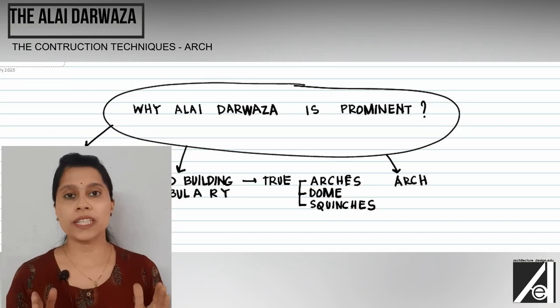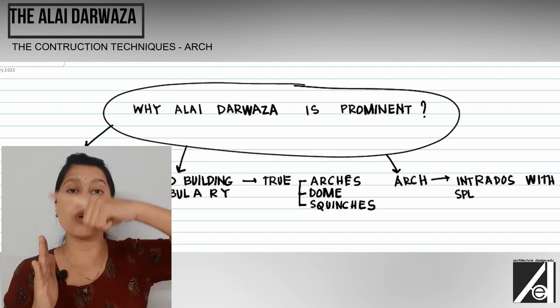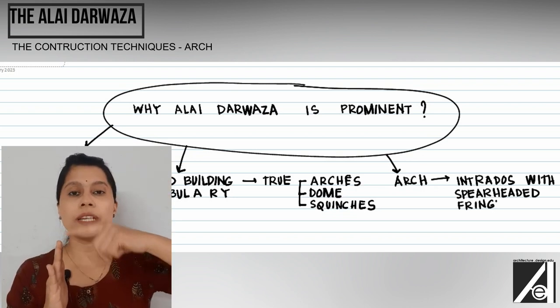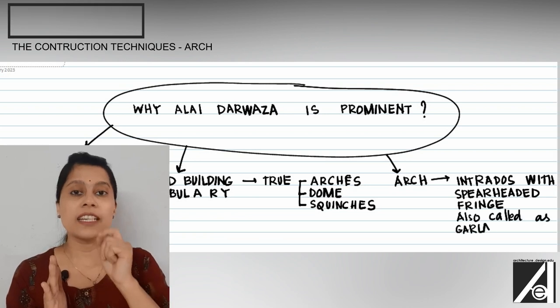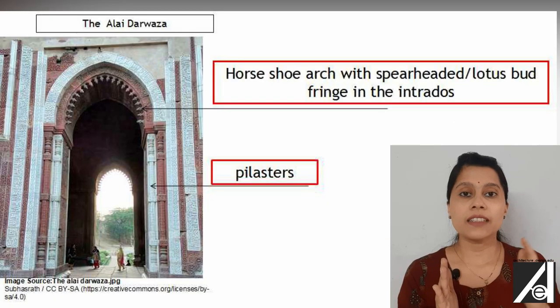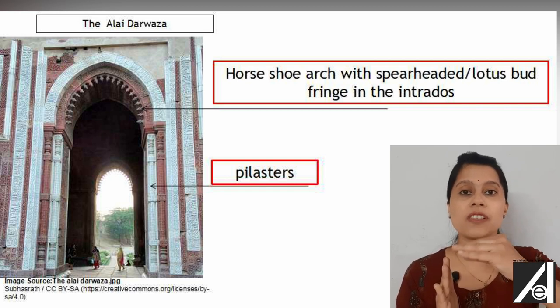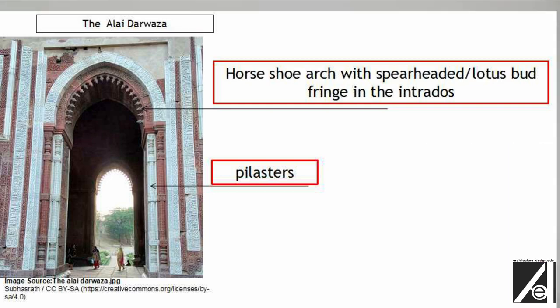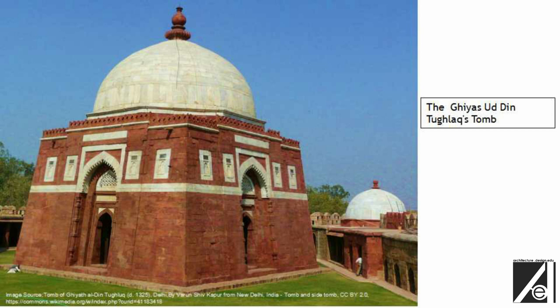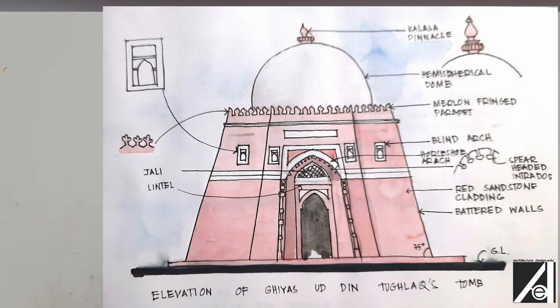The arch here is quite distinctive: while it uses the Islamic arch form, within the intrados of the arch a very unique Indian-Hindu feature has been added — a garland of buds, also referred to as a spearheaded fringe. This softens the stern profile of the arch. This technique was subsequently used in many other Indo-Islamic buildings, such as Ghiyasuddin Tughlaq's tomb, where the intrados is similarly adorned with a garland of buds.